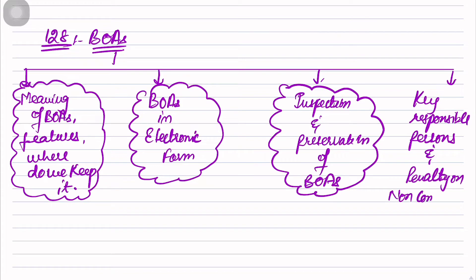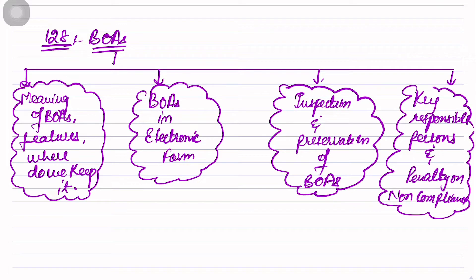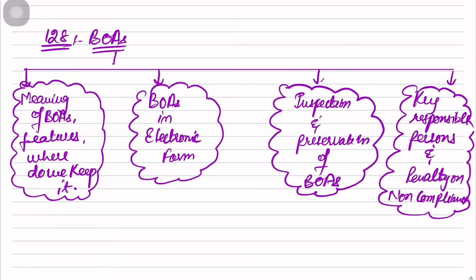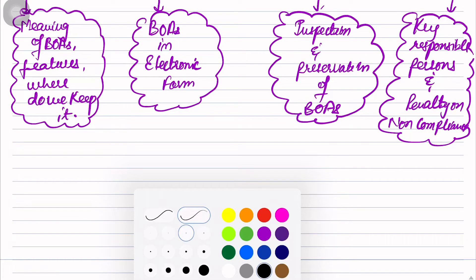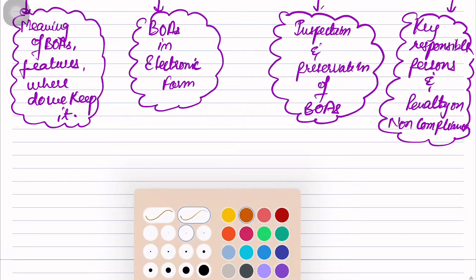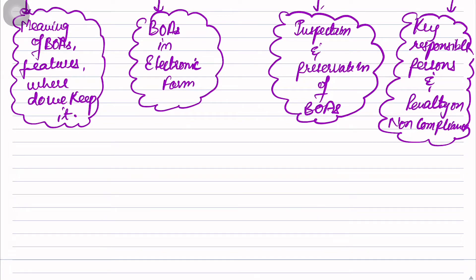It's a little bit lengthier but very easy - will take 15-20 minutes to understand this particular section. Now let us understand point number one: meaning of Books of Accounts, features, and where do we keep it.